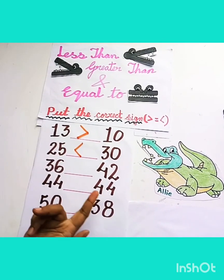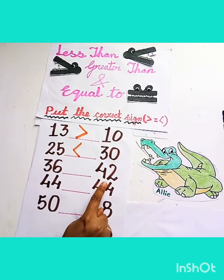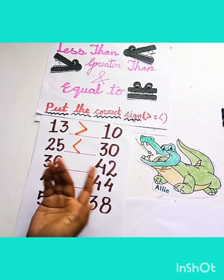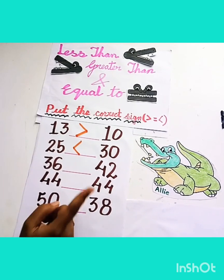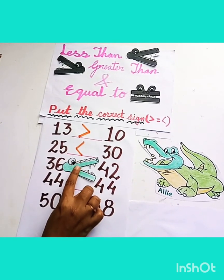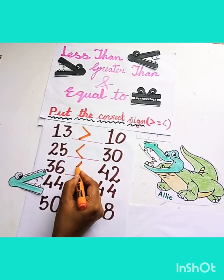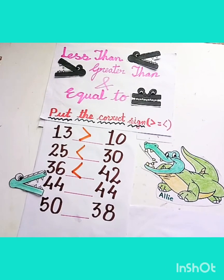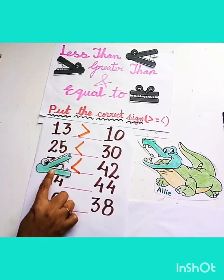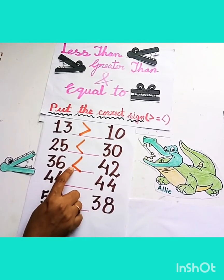Now, tell me children, which number will Ellie eat? Number 36 or number 42? Ellie likes the bigger number, so she will eat number 42. Like this. So we will put the less than sign — like Ellie's mouth. In the less than sign, the mouth is closed towards the smaller number.